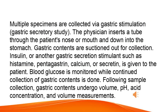Multiple specimens are collected via gastric stimulation, gastric secretory study. The physician inserts a tube through the patient's nose or mouth and down into the stomach. Gastric contents are suctioned out for collection. Insulin, or another gastric secretion stimulant such as histamine, pentagastrin, calcium, or secretin, is given to the patient. Blood glucose is monitored while continued collection of gastric contents is done. Following sample collection, gastric contents undergo volume, pH, acid concentration, and volume measurements.